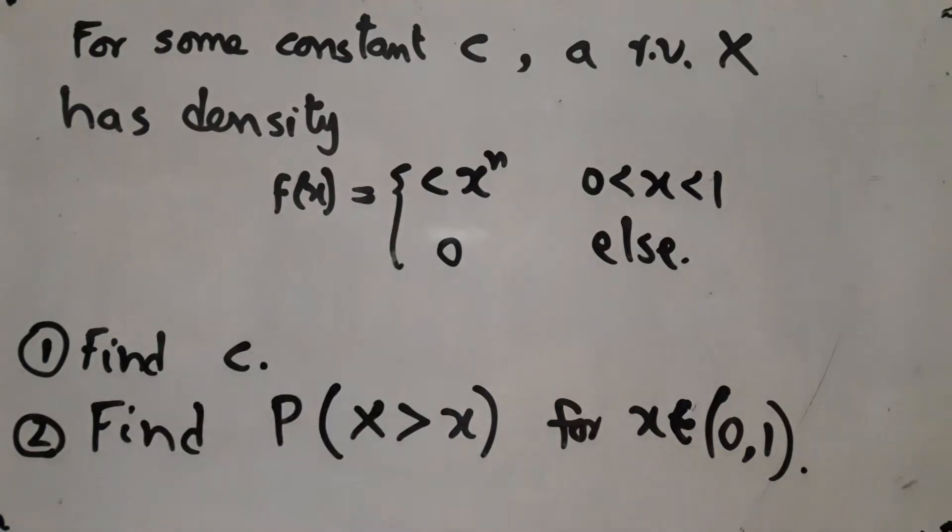Now here is a problem for you to solve. For some constant c, a random variable X has density given by this formula. c is not given to you, you have to work out the value of c, and then you have to find out this quantity P(X > x) as a function of little x where x lies in the open interval (0,1).